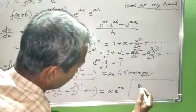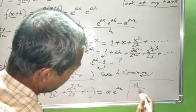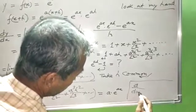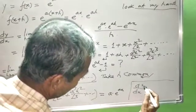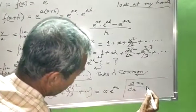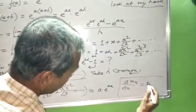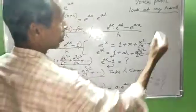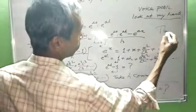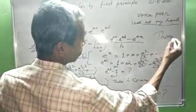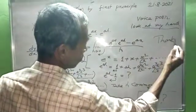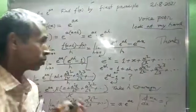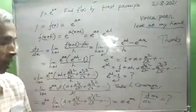Therefore, d by dx of e to the power ax equals a into e to the power ax. Thanks. Namaskar.